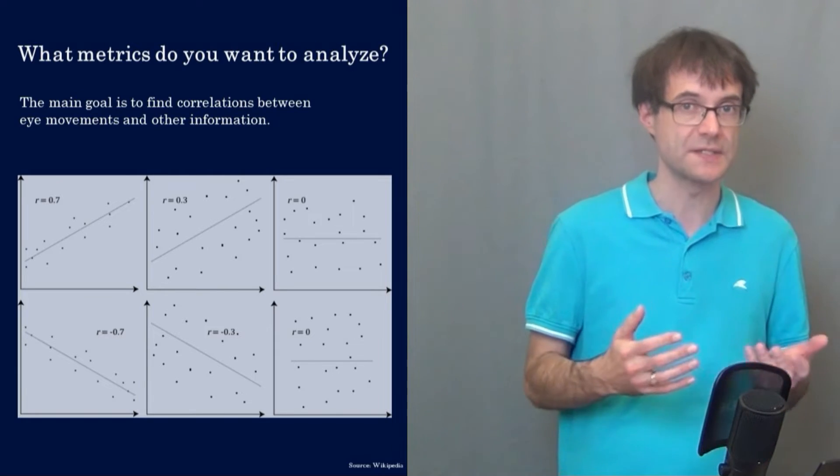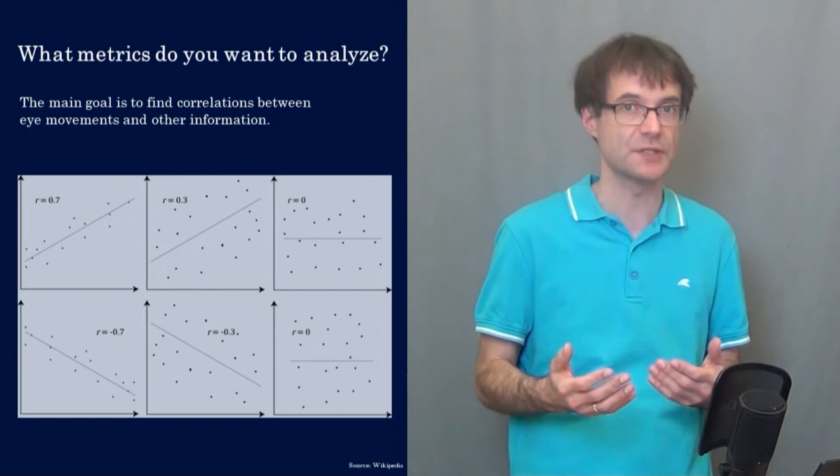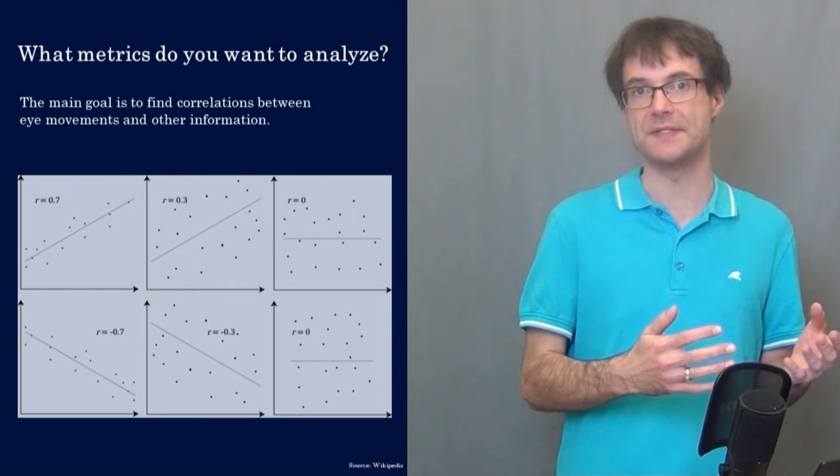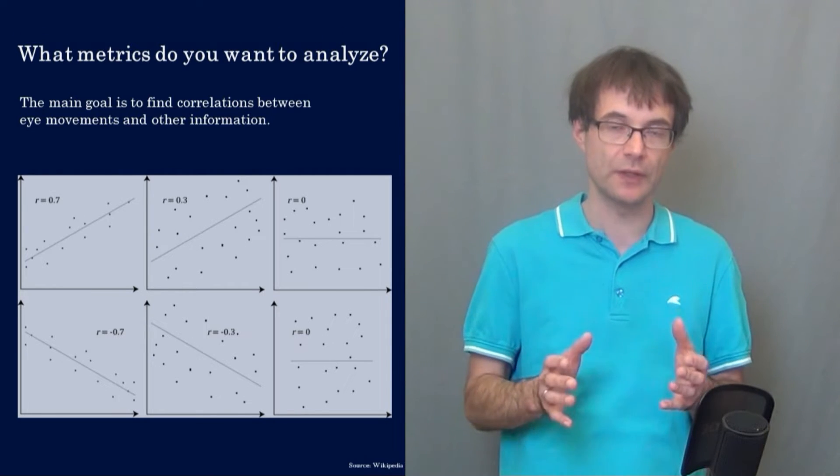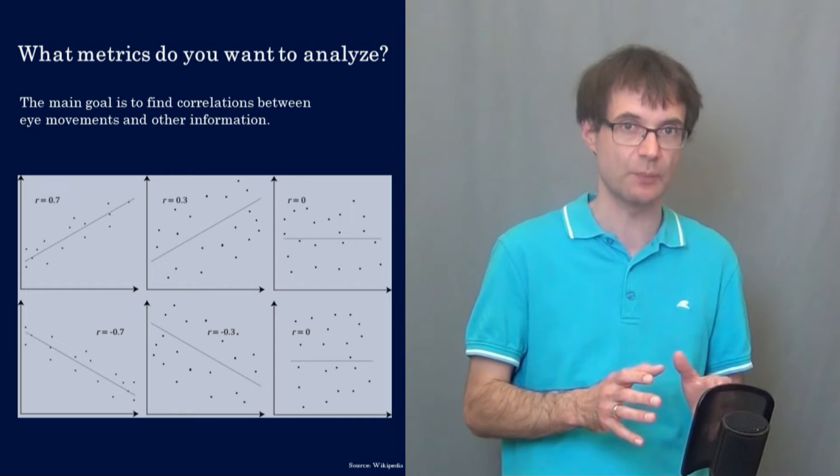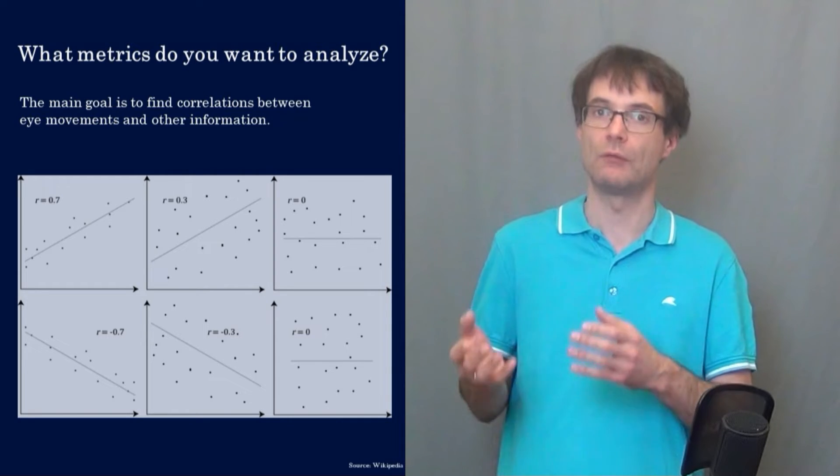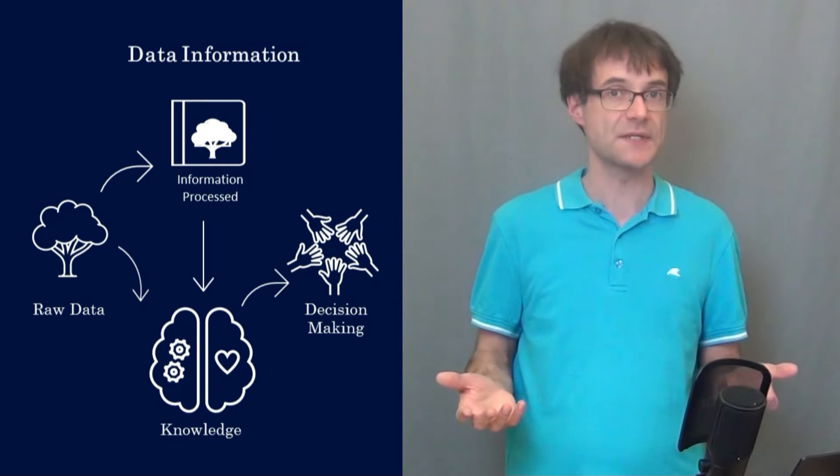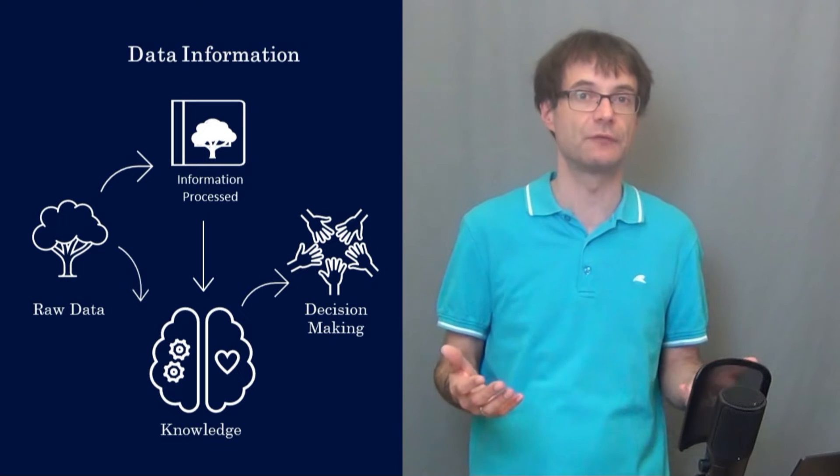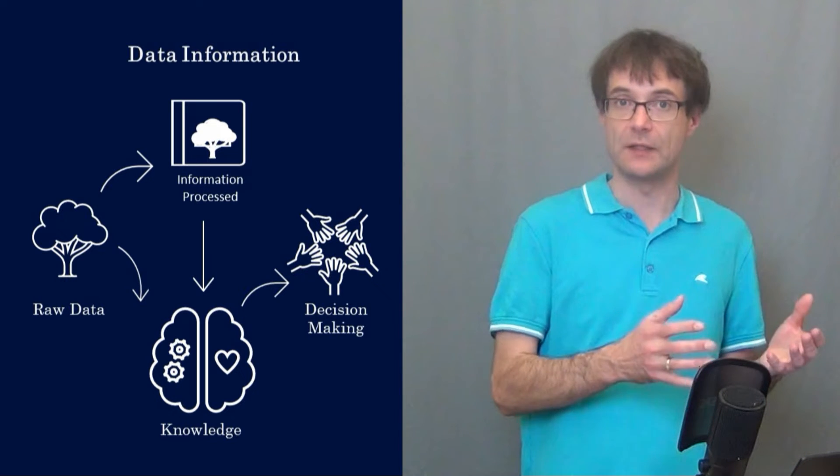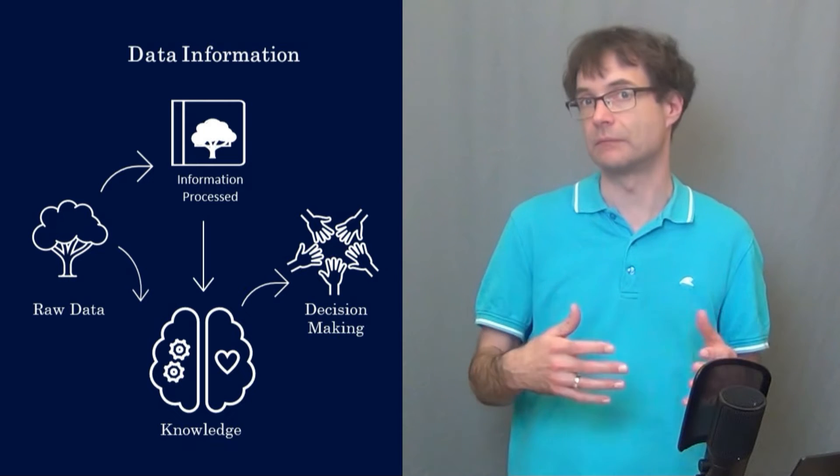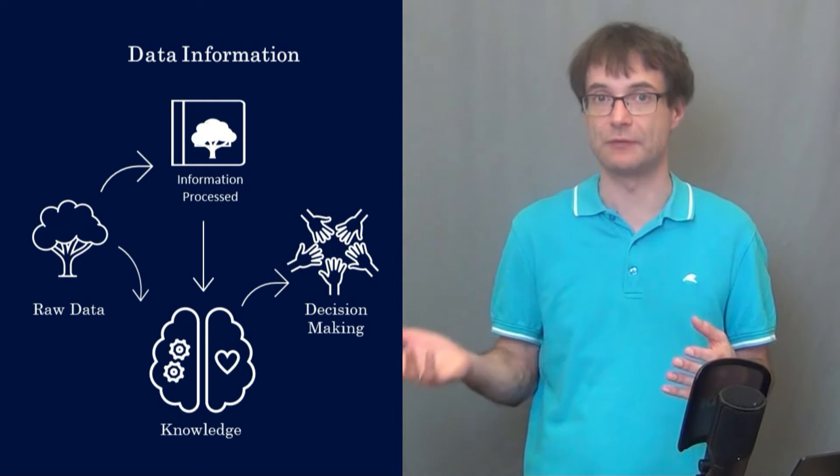Most times the goal is to find correlations between the eye movements and other information. Correlation means we are looking for the relationship between two or more variables. In a user experiment we can record different information about the participants.